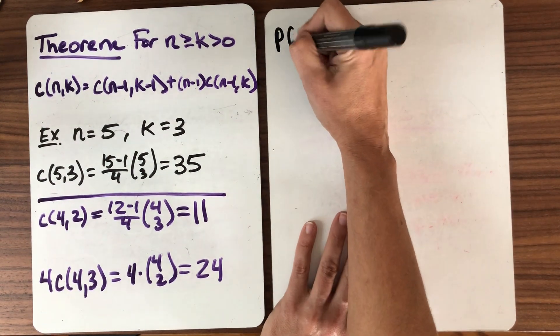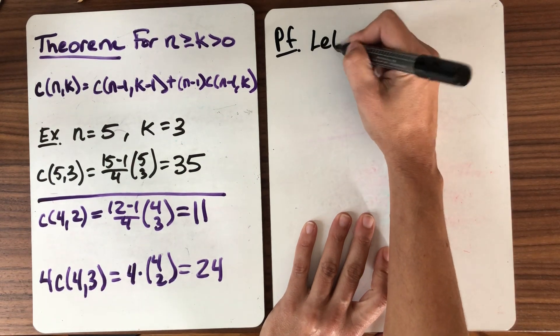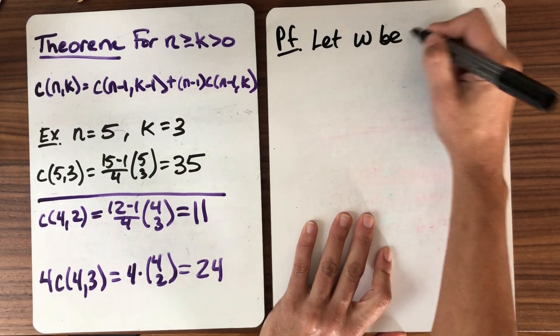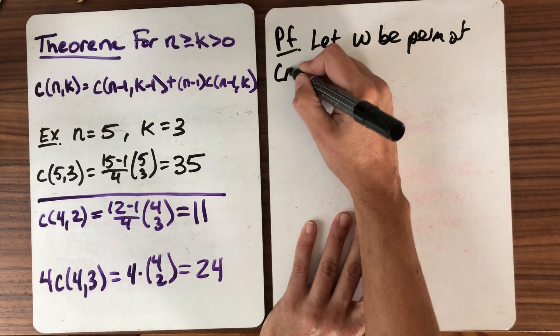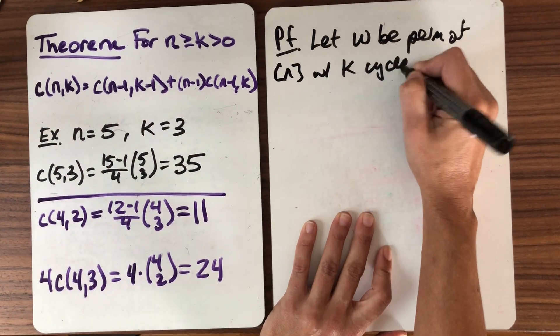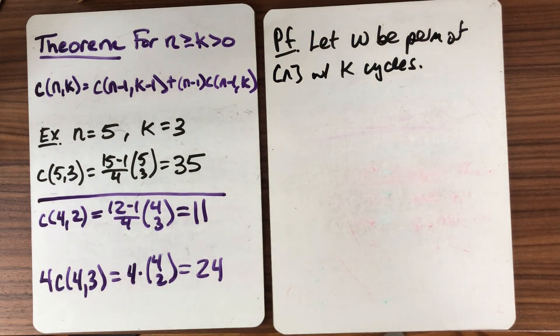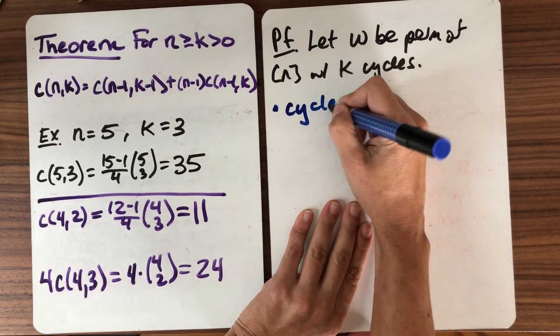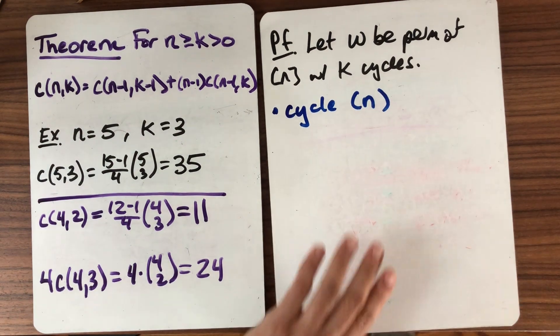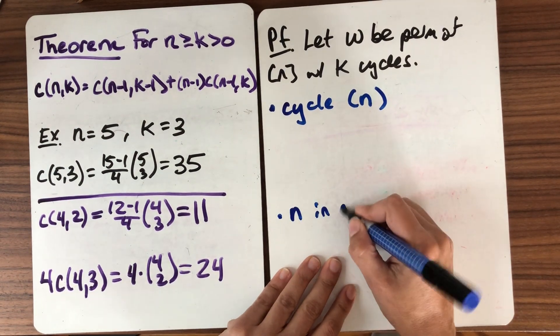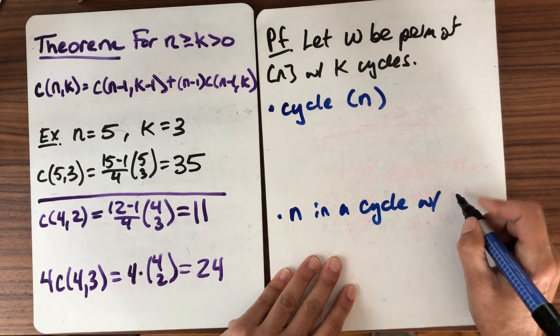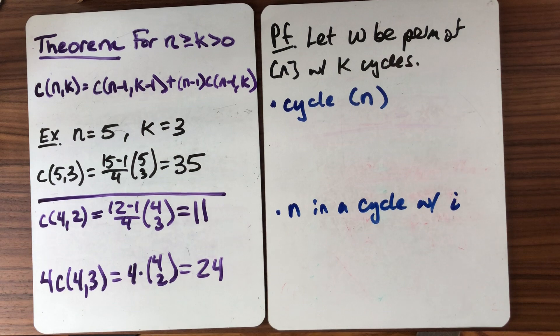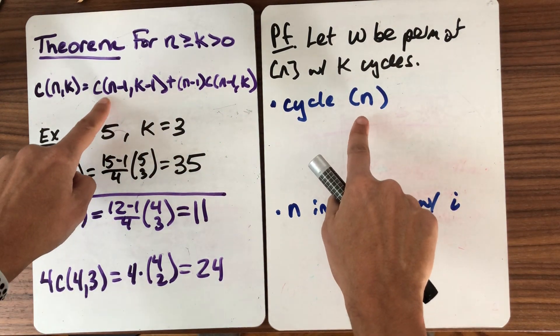So here's our proof of the formula. We're going to let w be a permutation of n with k cycles. We're going to think about what are our two disjoint cases. They need to be disjoint. So either we have a cycle that's just n, or n is in a cycle with, say, i. So those are the two cases. Either n is a fixed point, goes to itself, or it's not. We'll see that the n is a fixed point is going to go with this case.